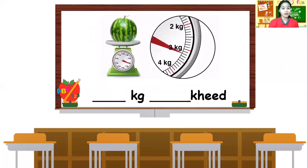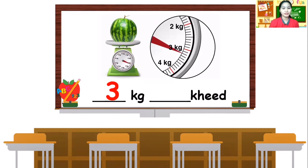Next, what is the mass of the watermelon? What kilogram is this? Very good! And how many hg? One, two. What is the mass of the watermelon? Good job! That would be three kilogram and two hg. Very good!